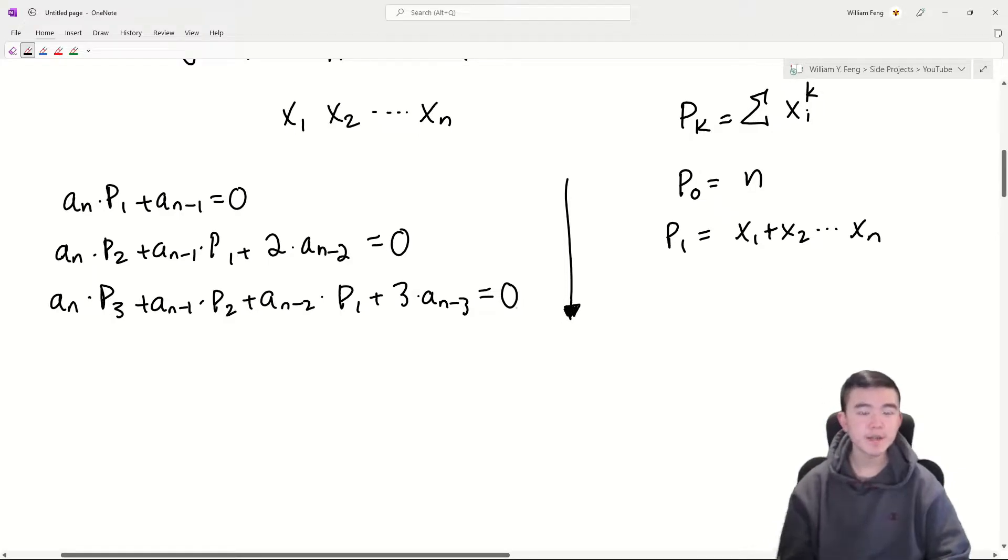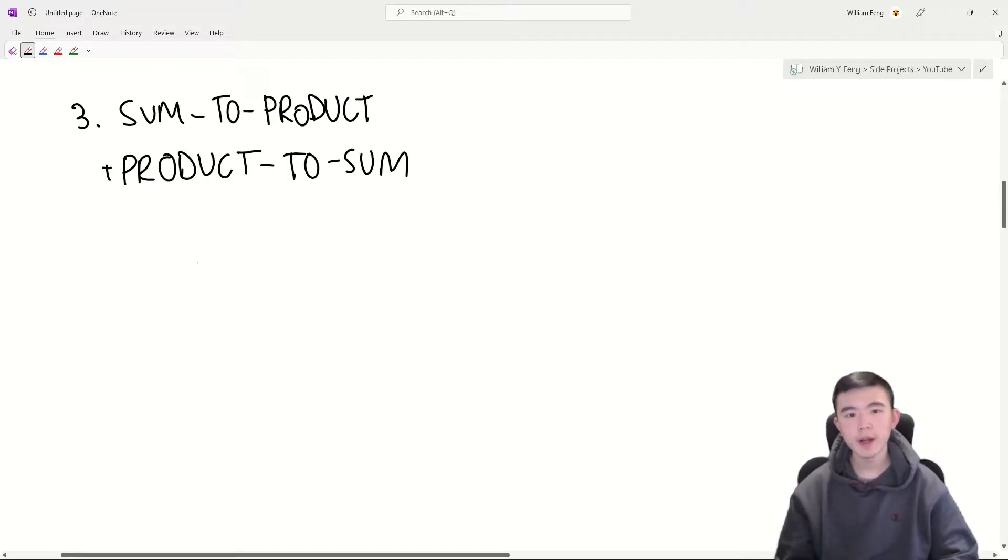Now, these are nice because, for example, using just p1, p2, and p3, we can find p4 in the next equation. These are often useful when we have algebra problems involving the roots of a polynomial and lots of Vietas as well.